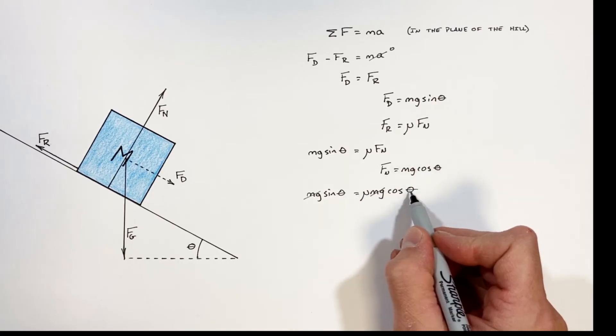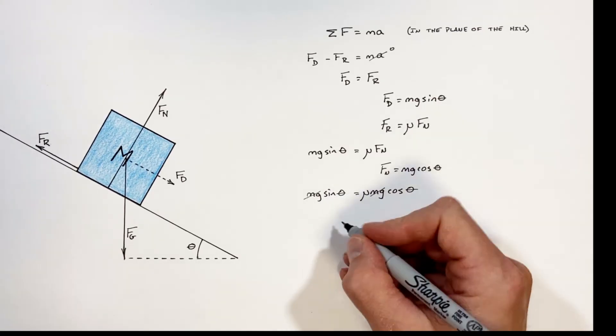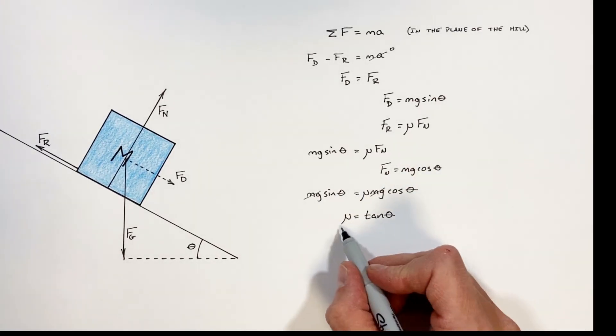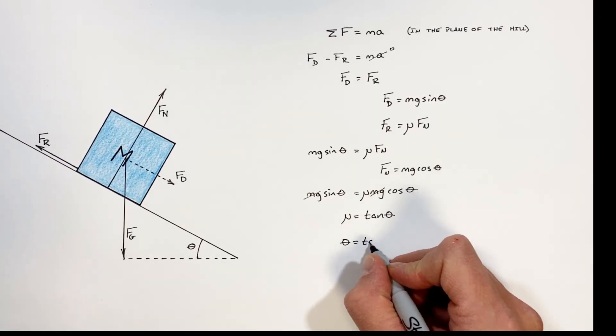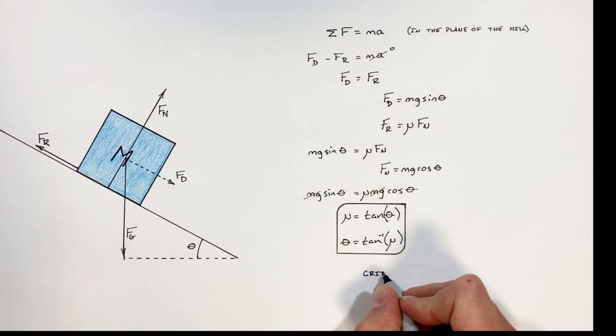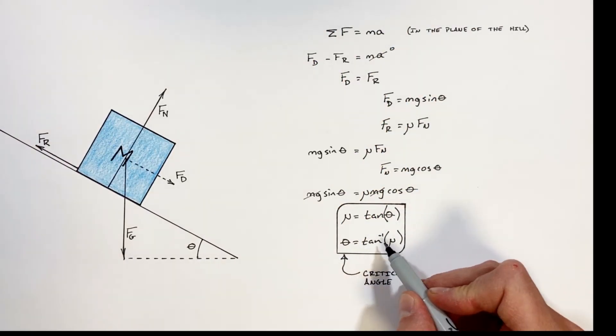And if we want to relate mu to theta, we need to combine the cosine and the sine. And we're left with this, mu is equal to the tangent of theta. Or rearranging this for theta we get, theta is equal to the inverse tangent of mu.